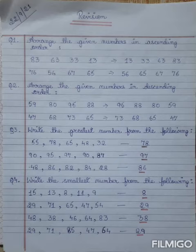Question number four: write the smallest number from the following. Students, there are smallest numbers given one by one and from there we have to write the smallest number.